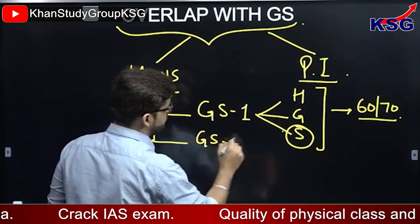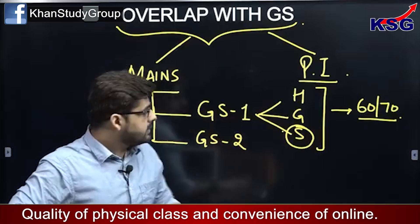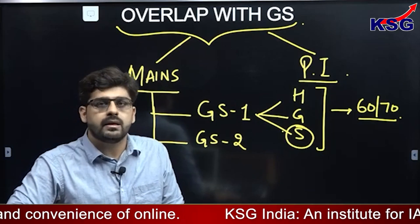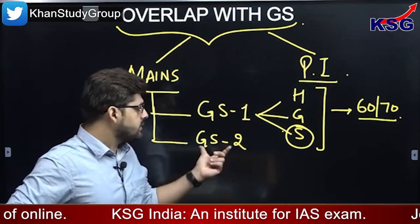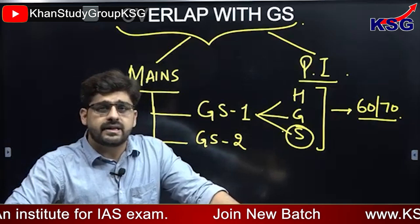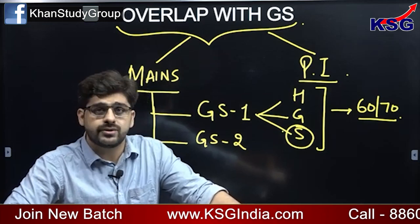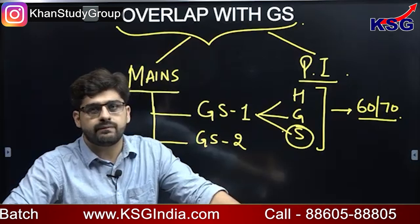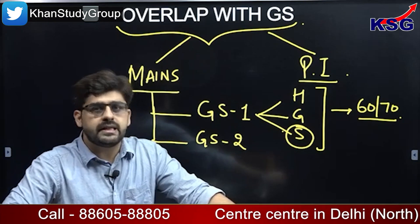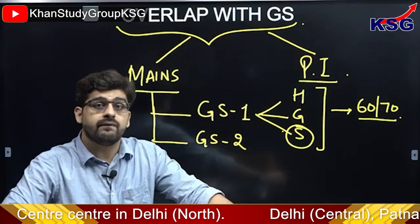Moving ahead to GS 2 — GS 2 is essentially a paper which is studied in detail in PSIR. PSIR is divided into two papers: paper 1 and paper 2. In paper 1, we have the Indian government and politics part which is nothing but the general studies two paper of the mains examination. Topics like Indian polity, Indian constitution, the working of the Indian parliament, the working of the Indian judiciary, the issues around the executive — these all are syllabus for GS 2 as well as for PSIR, a direct overlap. Similarly, in GS 2, we have the international relations section which forms a very important part of the syllabus.